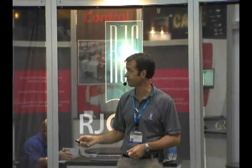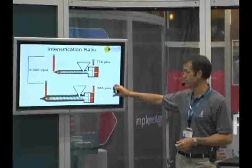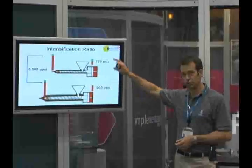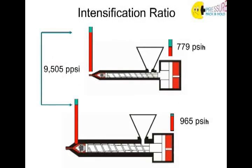So it's very important that this concept is understood so that you're able to make that process transfer more effectively. You can see that my setting on the molding machine has to be different in order to duplicate conditions inside the cavity of the mold.